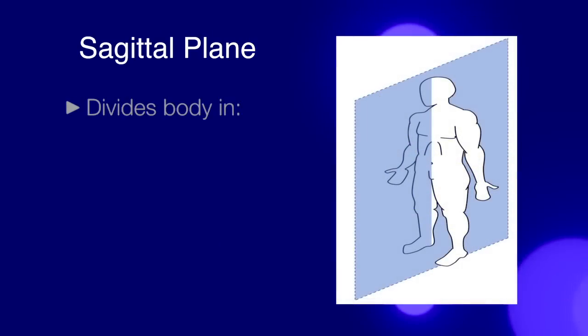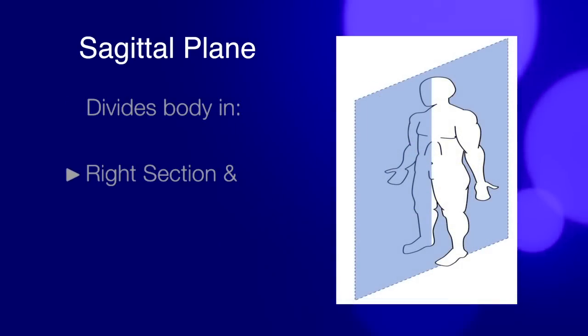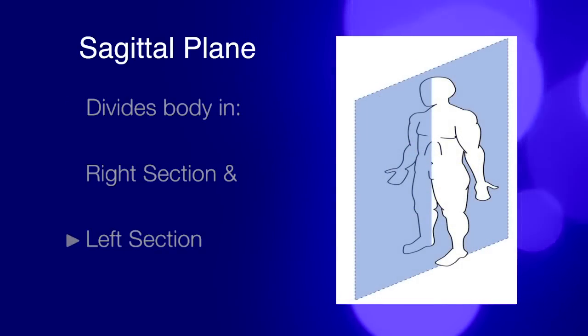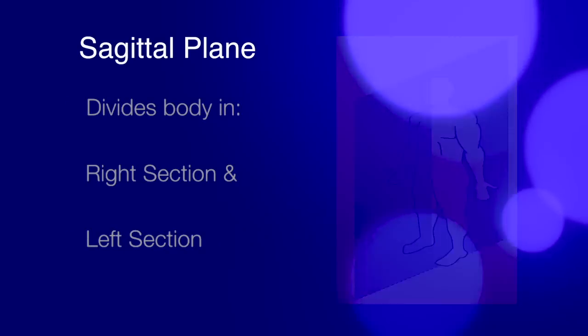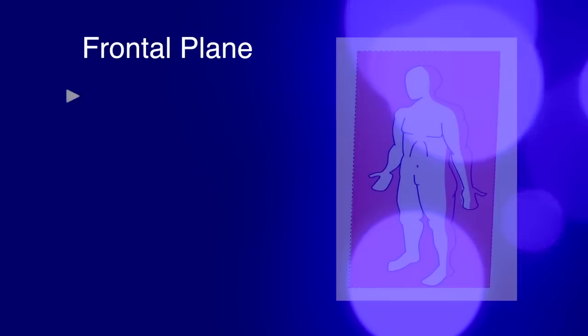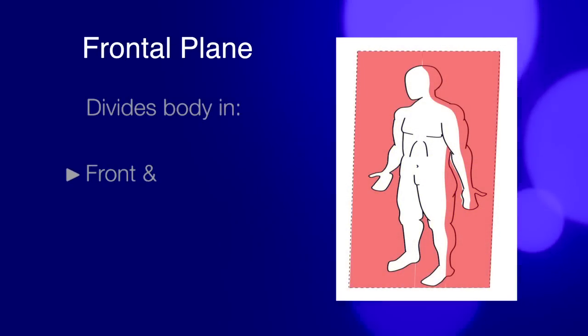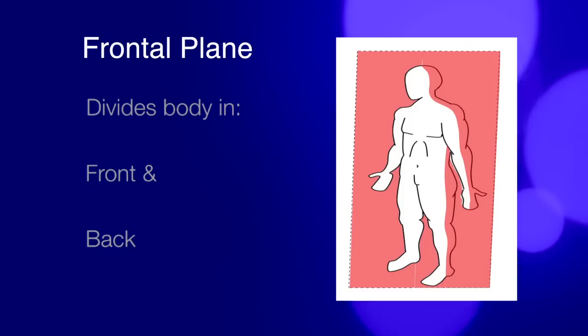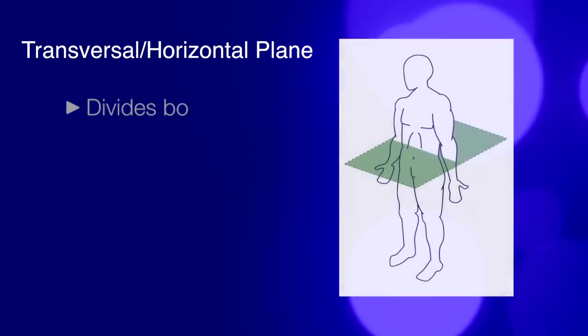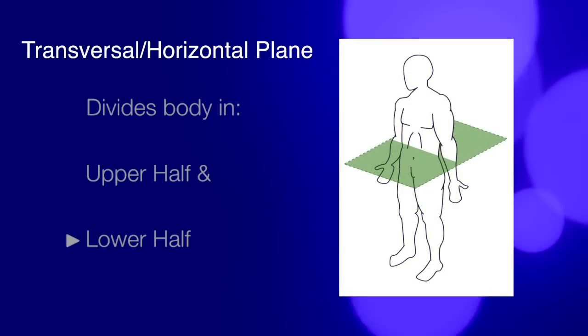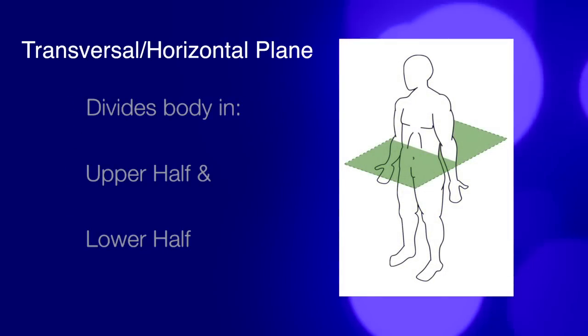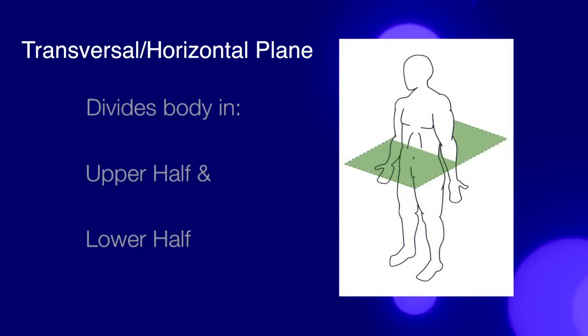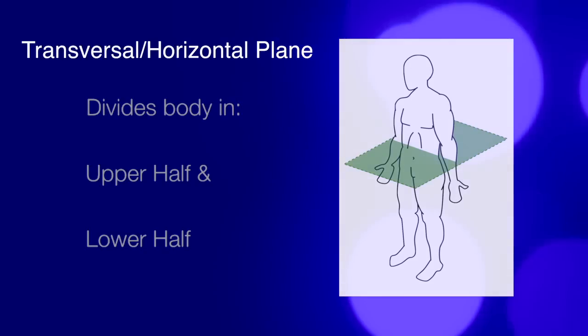The sagittal plane divides the body into right and left sections. The frontal plane is dividing the body into a front and a back section. The transversal or horizontal plane divides the body into an upper and the lower half.